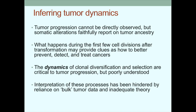What happens during the very first few cell divisions after transformation may provide clues as to how we can better detect, treat, and ultimately prevent carcinogenesis. We're interested in understanding the dynamics of how tumors diversify - fundamental to metastasis and therapeutic resistance. We understand the elements of somatic evolution, which include drift, mutation, and selection, but we have a very limited understanding of their dynamics. This is partly due to our reliance on bulk samples and our failure to fully leverage evolutionary and population genetic theory.